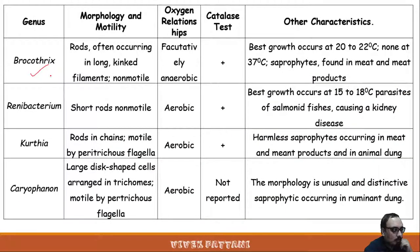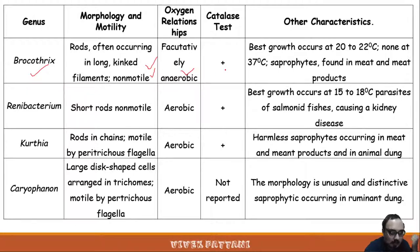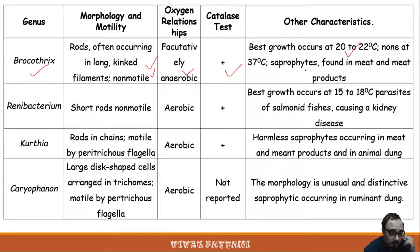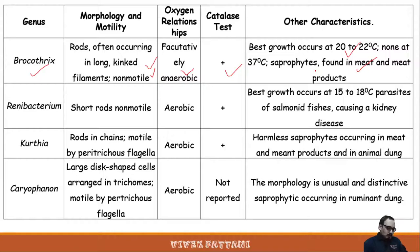Brochothrix: rods often occurring in long filament-like structures; non-motile; facultatively anaerobic; catalase positive. Best growth occurs at 20–22°C but none grow at 37°C. They are saprophytes and may be found in meat and meat products.